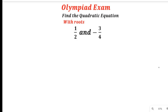Hello esteemed viewers, welcome to our Mathematics tutorial for today. In today's tutorial we are going to consider an Olympiad exam question. This is very unique because we are asked to find the quadratic equation and we are given two roots: 1 divided by 2 and minus 3 divided by 4. We are asked to find the quadratic equation whose roots are these two values.